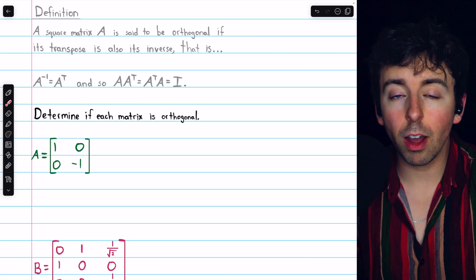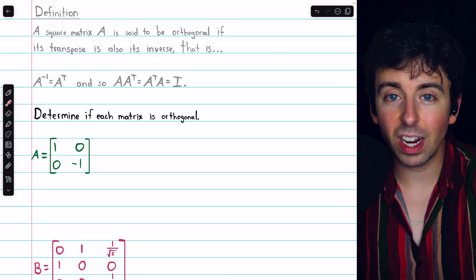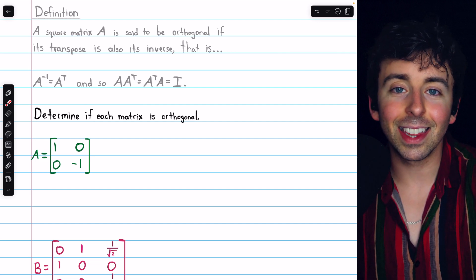So to check if these matrices are orthogonal, we'll just multiply them by their transposes and see if we get the identity or not.